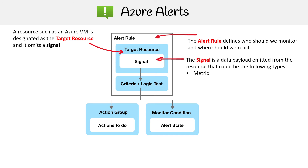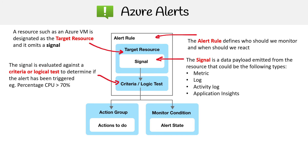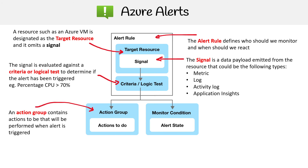That signal could be of the following types: a metric, a log, activity log, or Application Insights — you can see how that ties to the types of alerts. Then you have the criteria, or logical tests, which get evaluated to determine if we are in a triggered state. For example, it could be percentage CPU greater than 70%. Then you have your action group, which contains actions.